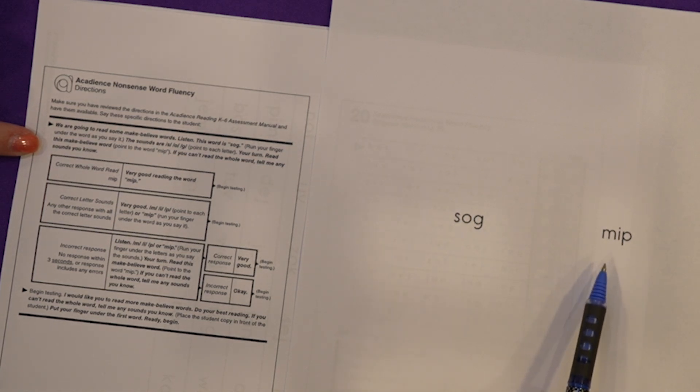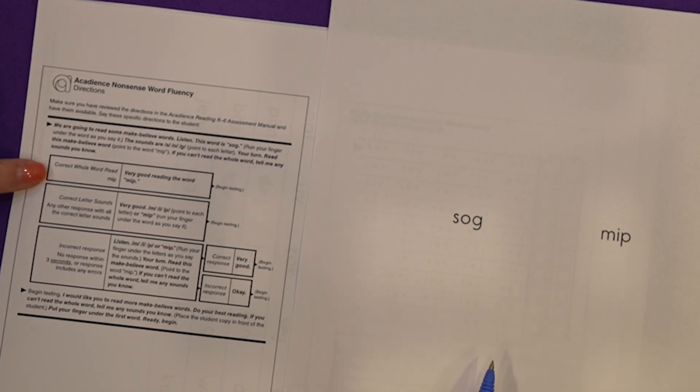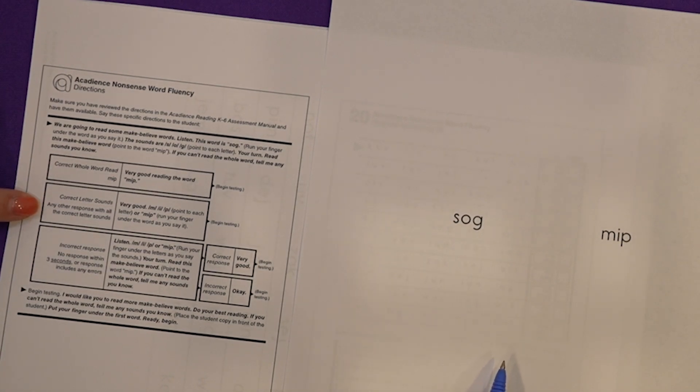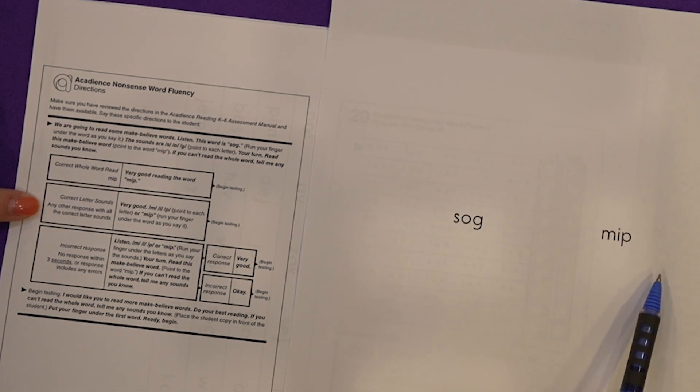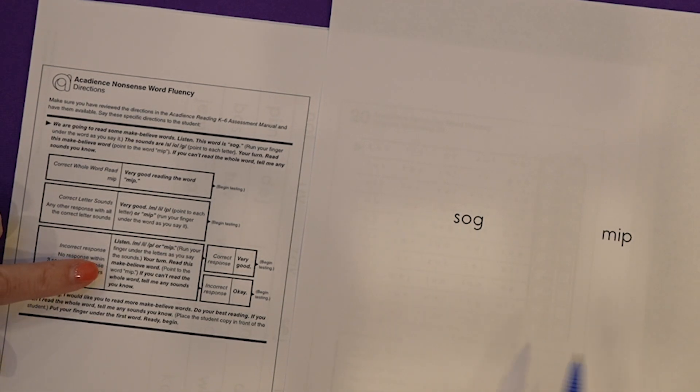Some students will right away say MIP. Some will say M-I-P. Depending on their answer it's how you respond. If they say MIP you say very good reading the word MIP. Or if they give the sounds you say very good M-I-P or MIP. And if they don't say it correctly you say listen M-I-P or MIP.